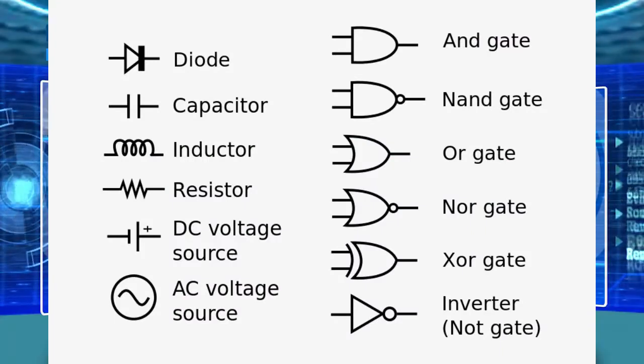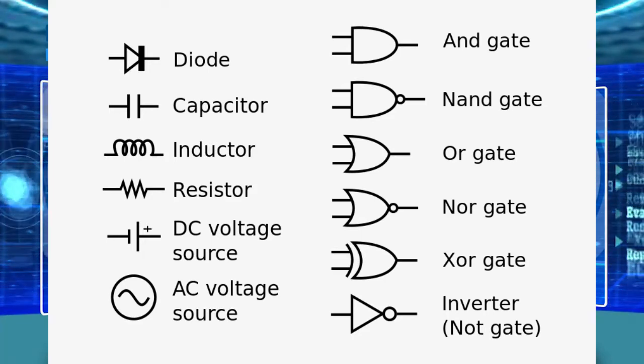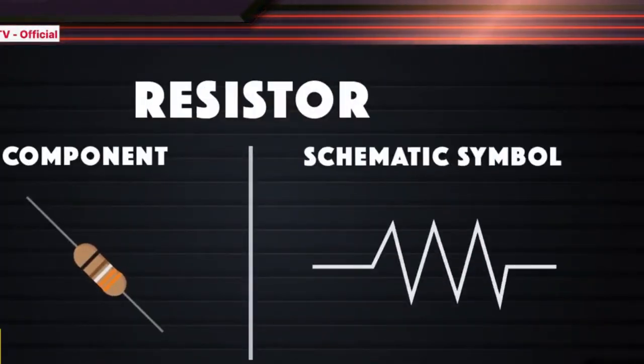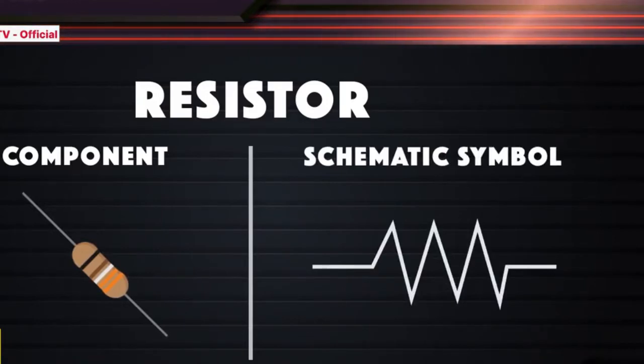In line with this, we also learned about the common electronic components and their schematic symbols such as the resistor. Resistors are used to reduce current flow, adjust signal levels, divide voltages, bias active elements, and terminate transmission lines.